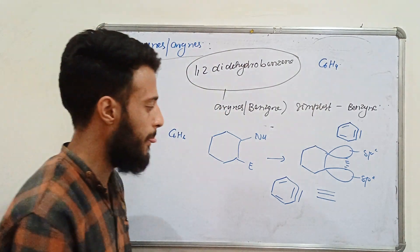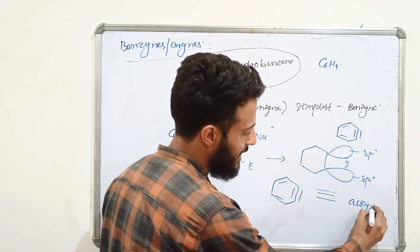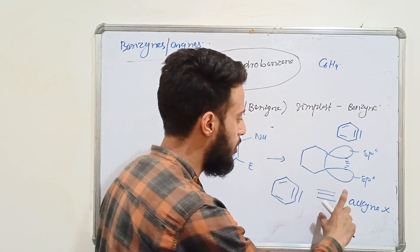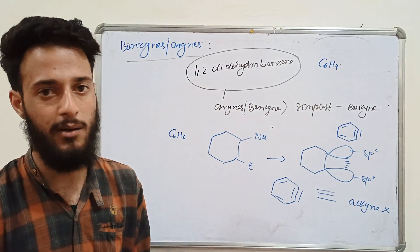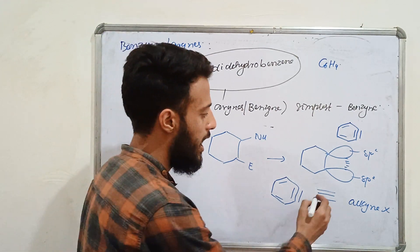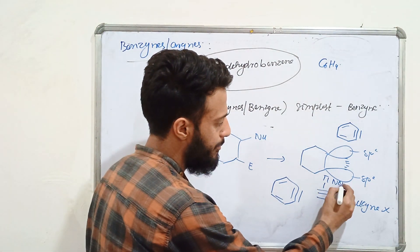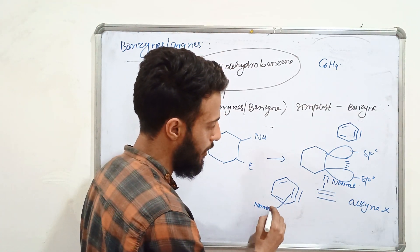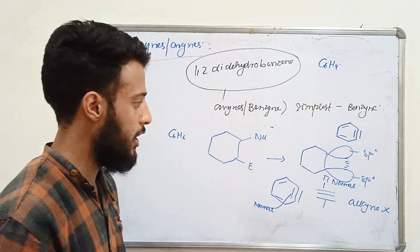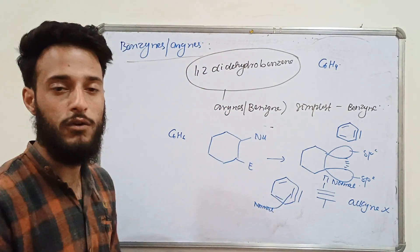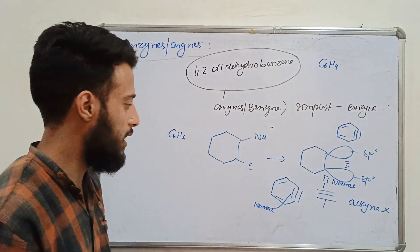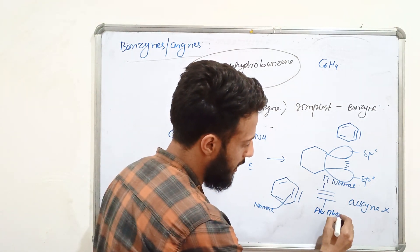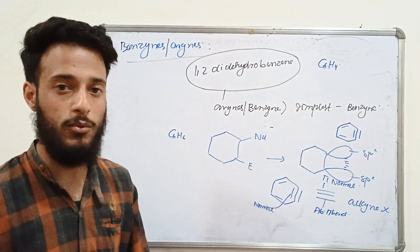Now here, three bonds exist in benzyne. However, these three bonds are not like those in alkynes. Many students get confused thinking this is a triple bond similar to alkynes, but that is not the case. One pi bond here is a normal pi bond, and the other pi bond — which formed when we removed the electrophile and nucleophile from ortho positions — is called an abnormal pi bond.